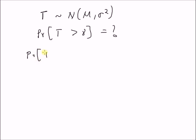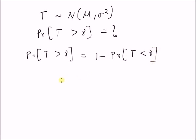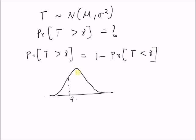The probability of t greater than gamma is equal to 1 minus the probability that t is less than gamma. Assume that gamma is given by this location; then the probability of t greater than gamma — that is, the area under the curve after gamma — is equal to 1 minus the area on the left side of gamma, the threshold.